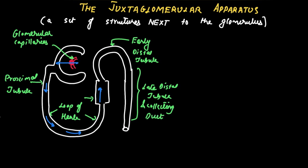There is a portion of the thick ascending limb which passes between the efferent and the afferent arteriole. This yellow-colored portion lies exactly between the efferent and the afferent arteriole — this is the portion of the thick ascending limb which passes between the efferent and the afferent arteriole.